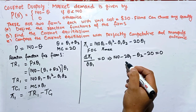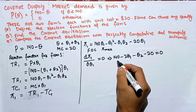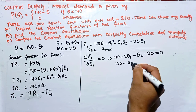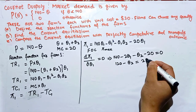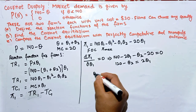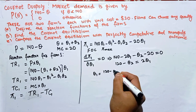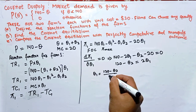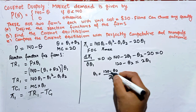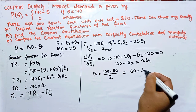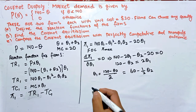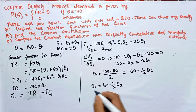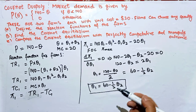Solving the first-order condition: 140 minus 20 gives 120, so we have 120 minus Q2 = 2·Q1. Transposing, Q1 = (120 minus Q2) / 2, which equals 60 minus (1/2)·Q2. So Q1 = 60 minus (1/2)·Q2. This is the reaction function for Firm 1.